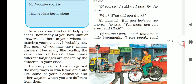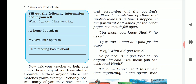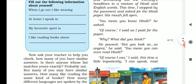Ask your teacher to check how many of you have similar answers. If you have the book, fill in the following information about yourself. When I go out, I like wearing — write what kind of dress you like. At home, I speak in — write which language: English, Tamil, Hindi, Telugu, whatever you speak at home. My favorite sport is — cricket, hockey, football, kabaddi, whatever you prefer. I like reading books about — write what kind of books you like to read.